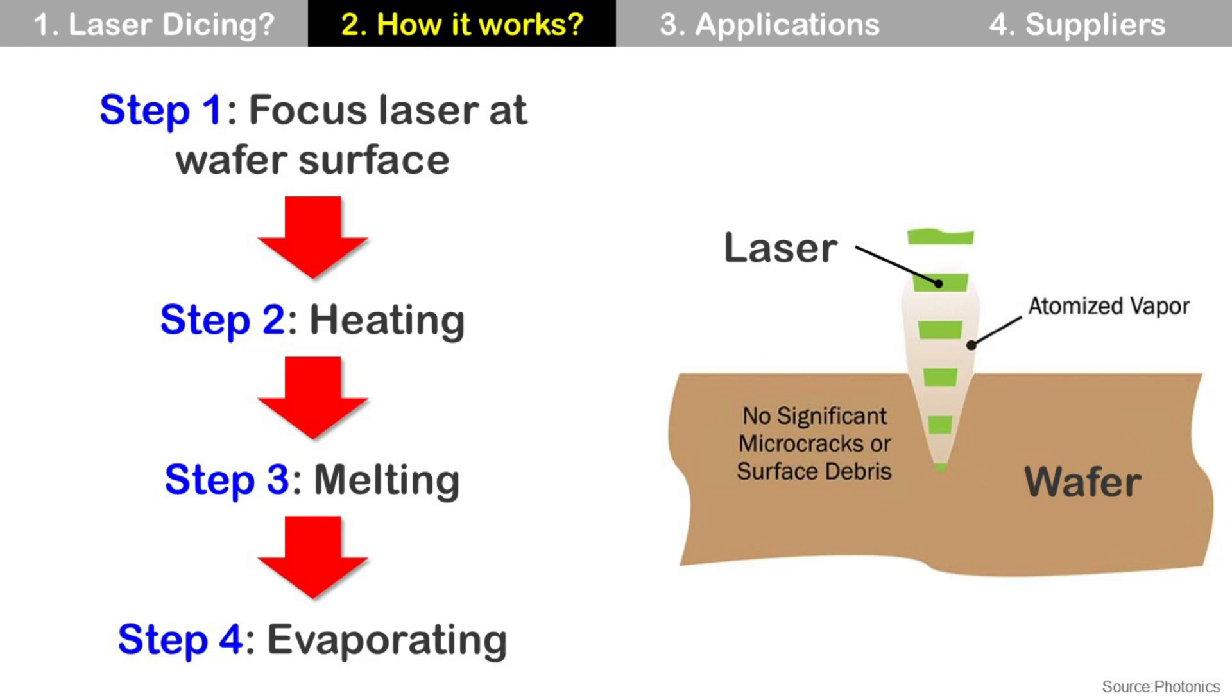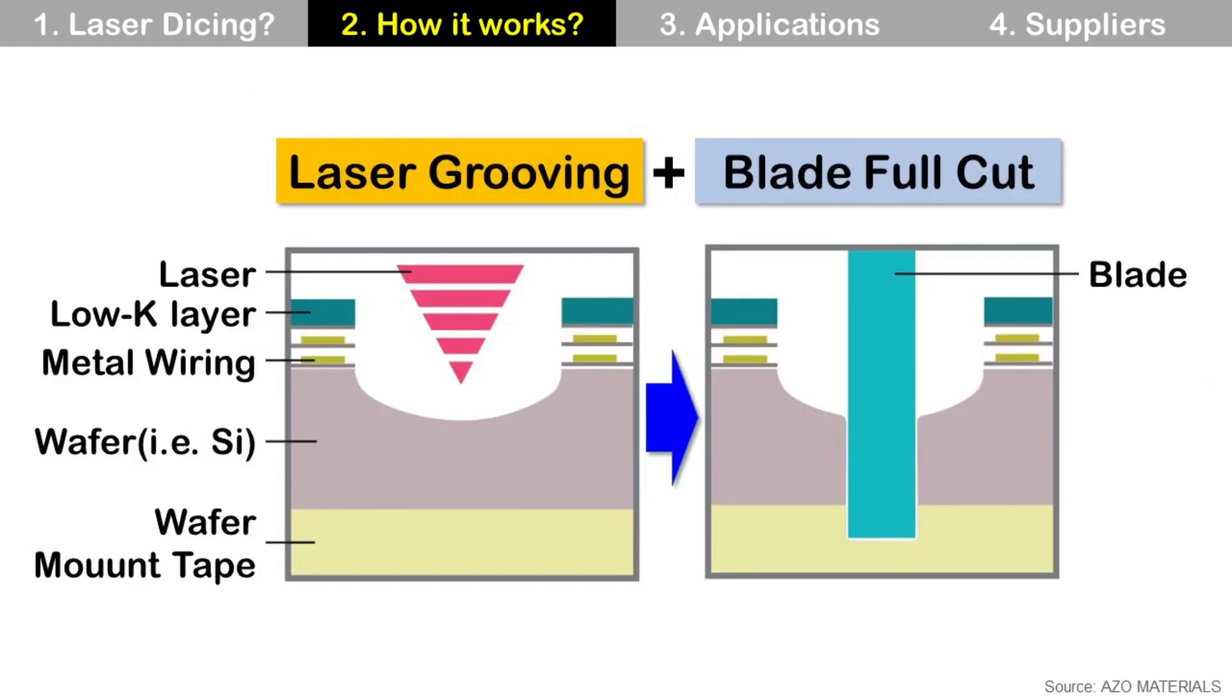Then remove. This way, diced wafer dies are separated from each other. There are two variations in laser ablation: laser grooving and laser full cut.